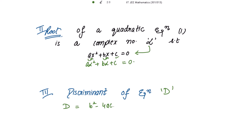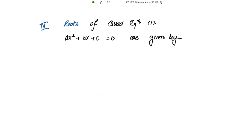Now the question arises: how to find the roots of the equation? For that there is a formula, which gives the roots as x = (−b ± √D) / (2a), where the discriminant D = b² − 4ac.